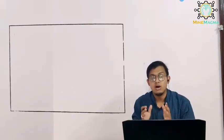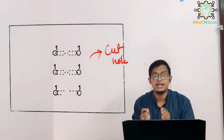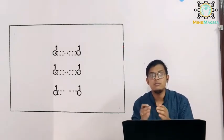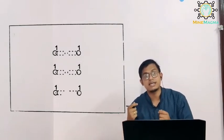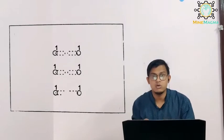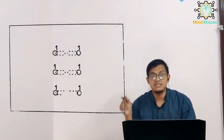So let us go to our next part. In the working area there are three basic hole types: one is our cut hole, the next is our easer hole, and the third one is our trimmer or dresser holes. The cut hole is basically needed so that we can provide a free face to the surrounding holes, which are our easer holes.